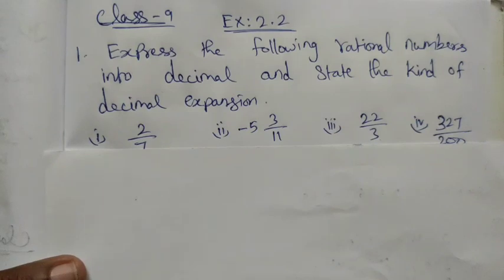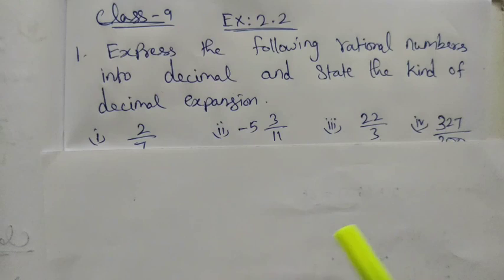Hi students, Class 9 Exercise 2.2 Question Number 1: Express the following rational numbers into decimal and state the kind of decimal expansion. So we'll convert these to decimal form.